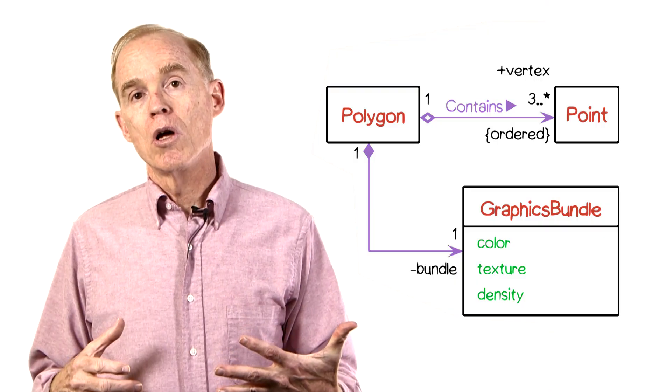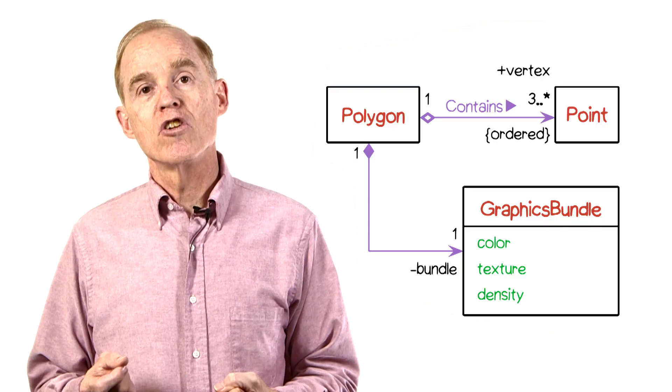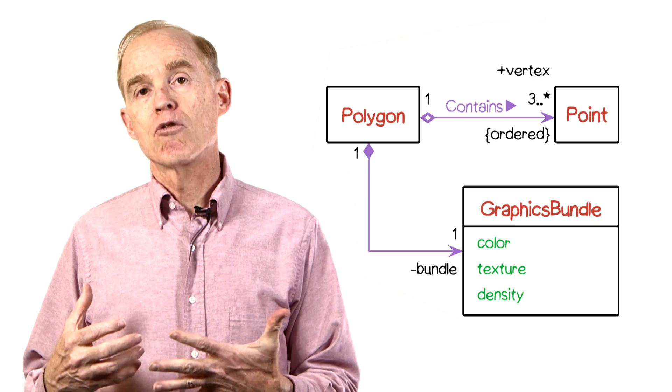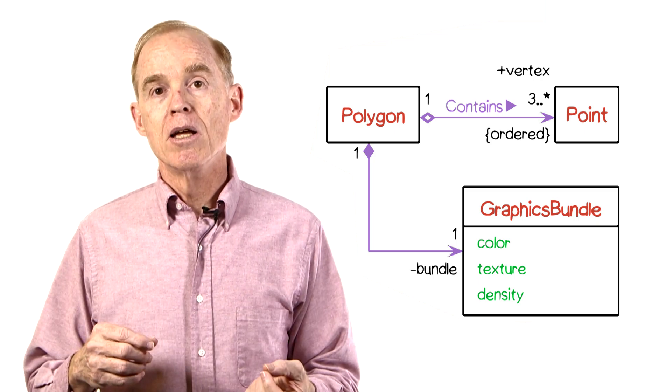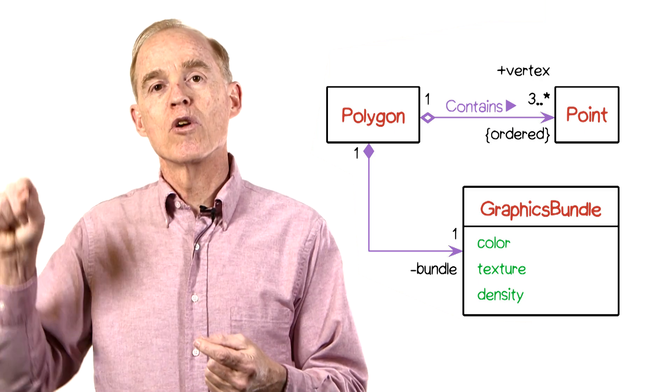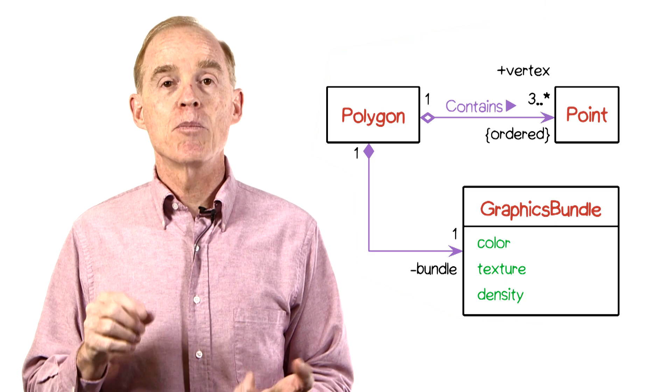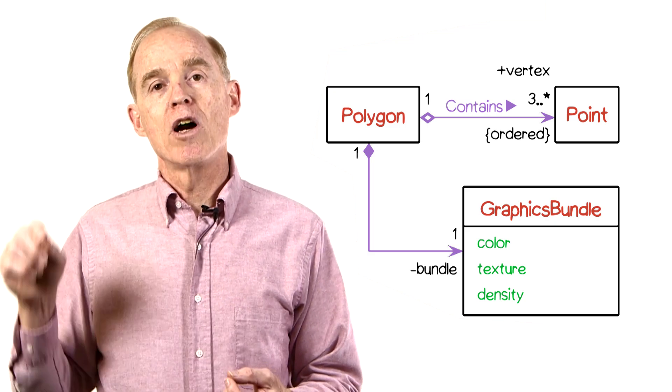We also saw a property ordered, which indicates that, at least for the case of the polygon and its points, those points are in a particular order. They might be, for example, in clockwise order.